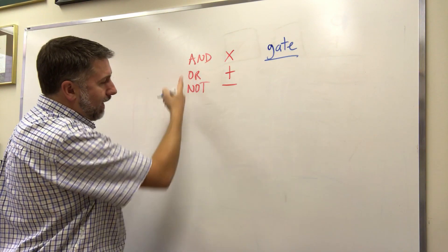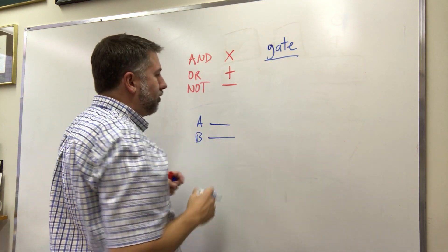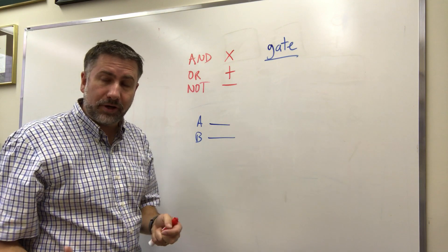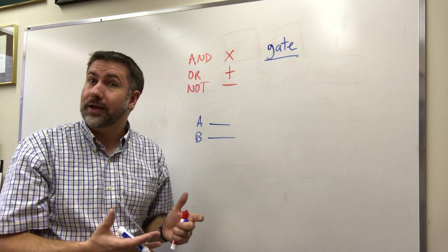When we had AND what we had is two values coming in A and B and then some operation was performed on them to have the result be one only if both of the inputs are one. That's what AND means.